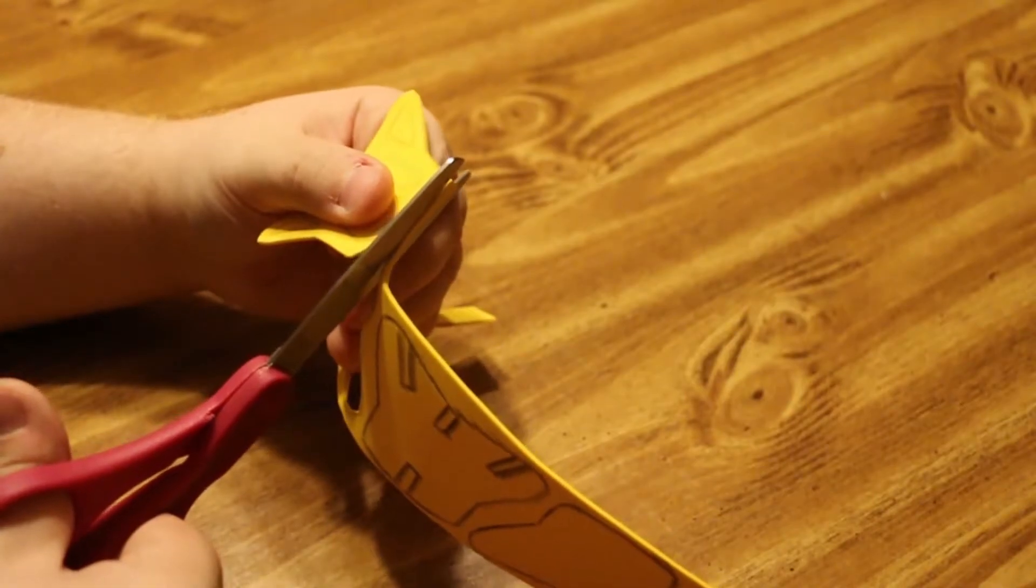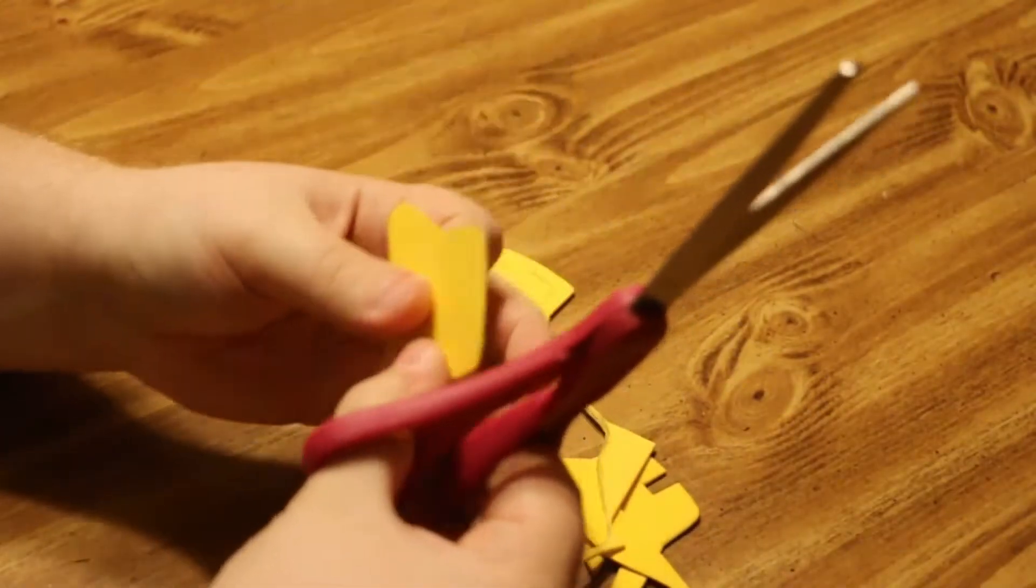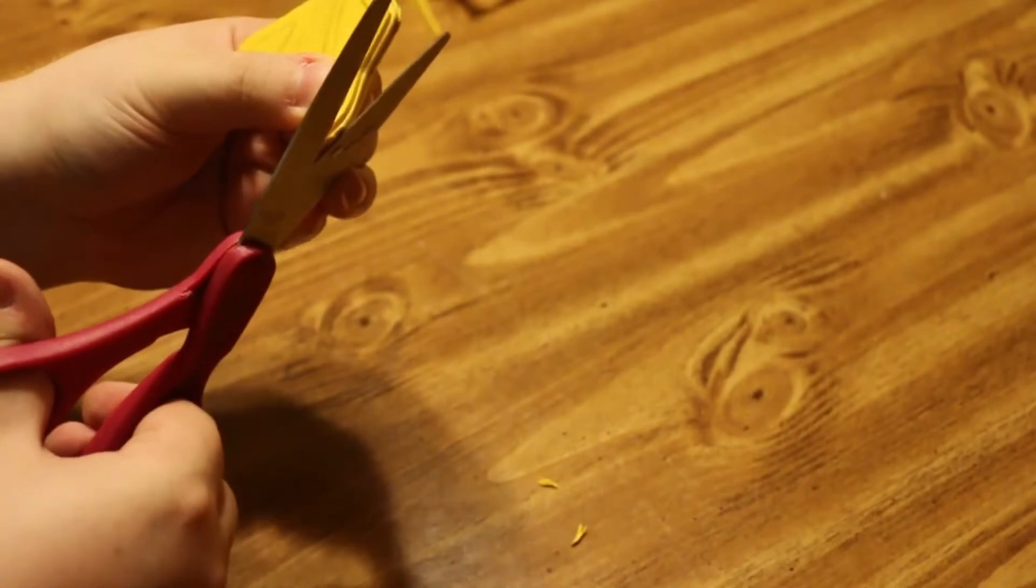I cut out the pieces and made the cuts I needed to the middle layer. Now I'm just making sure the back and middle layer are around the same size.